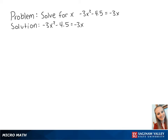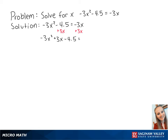For this problem, we want to solve for x in the equation negative 3x squared minus 4.5 equals negative 3x. First, we want the right side of the equation to be equal to 0. So we're going to add 3x to both sides to get negative 3x squared plus 3x minus 4.5 equals 0.